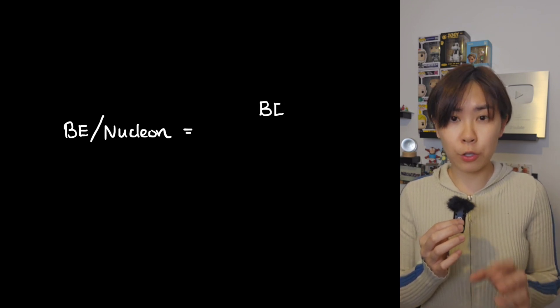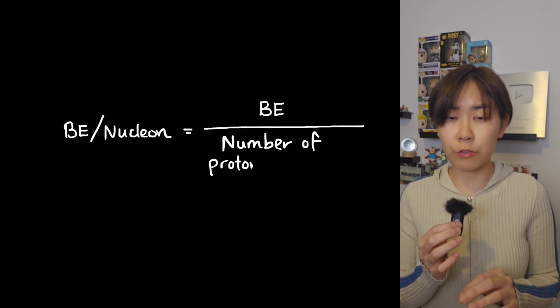To work out the binding energy per nucleon, you just have to divide the binding energy by the total number of protons and neutrons in the nucleus. For example,